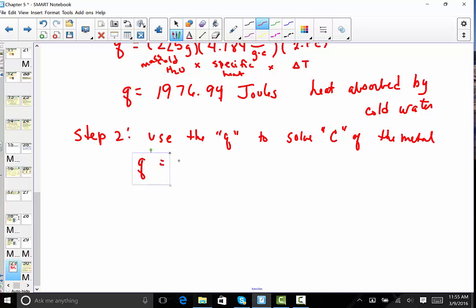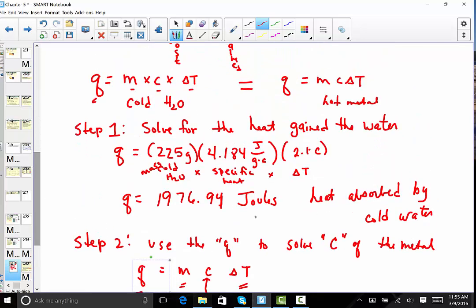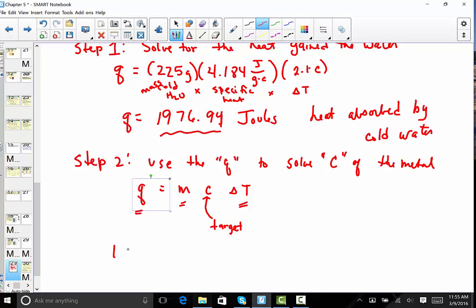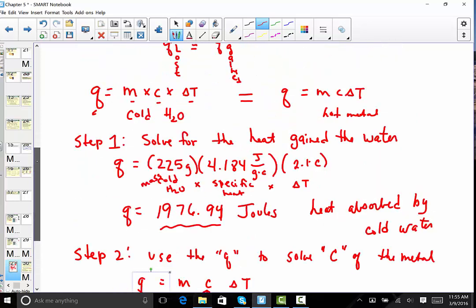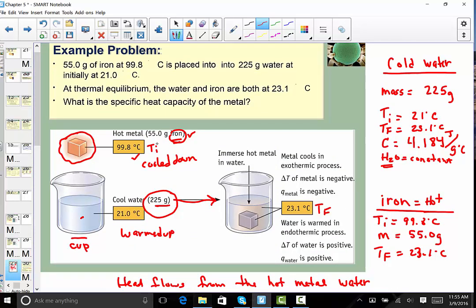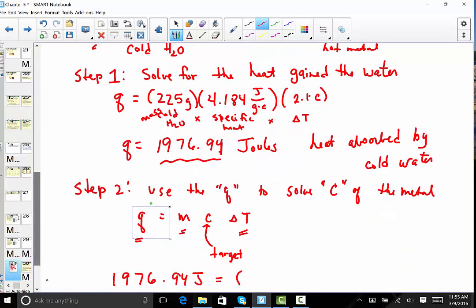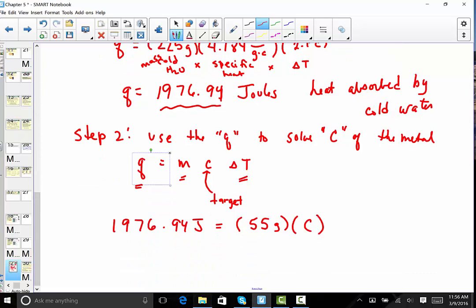So again, it's Q is equal to MC delta T. The Q we just solved for up above. The M is the mass of my metal. The change in temperature is subtracting Tf minus Ti. And this is our target variable now. The target is the specific heat. So I'm pulling out from here the answer to the heat gained by water. 1,976.94 joules. Heat gained is equal to heat loss. So once we calculated the heat gained by water, it now becomes the Q for the next set of problems. How much did our hot metal weigh? In this example, it was 55 grams. You will be using the mass of your copper penny for this step. But I'm going to model my problem here. 55 grams, the mass of this hot iron. The specific heat is my target variable.